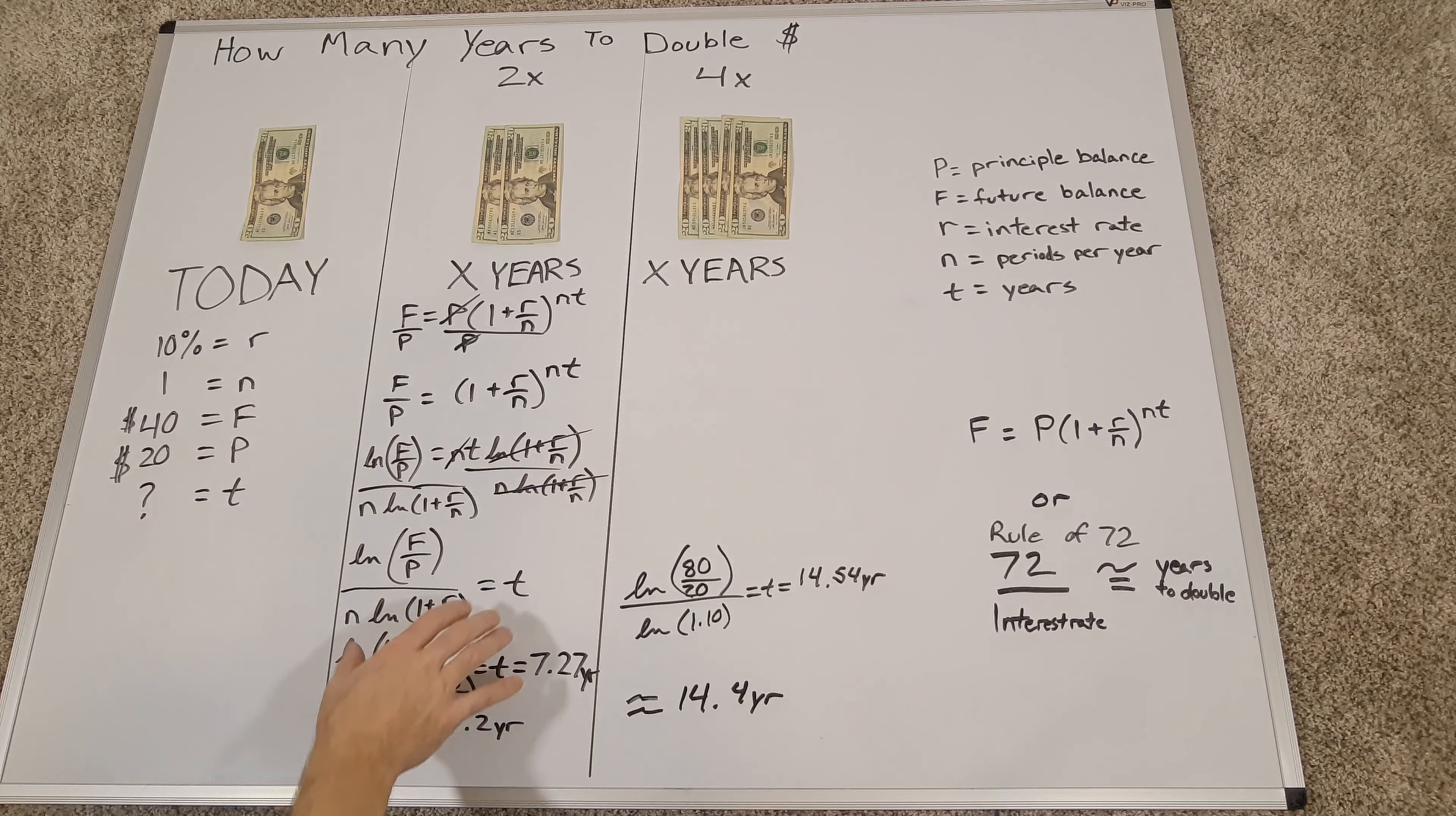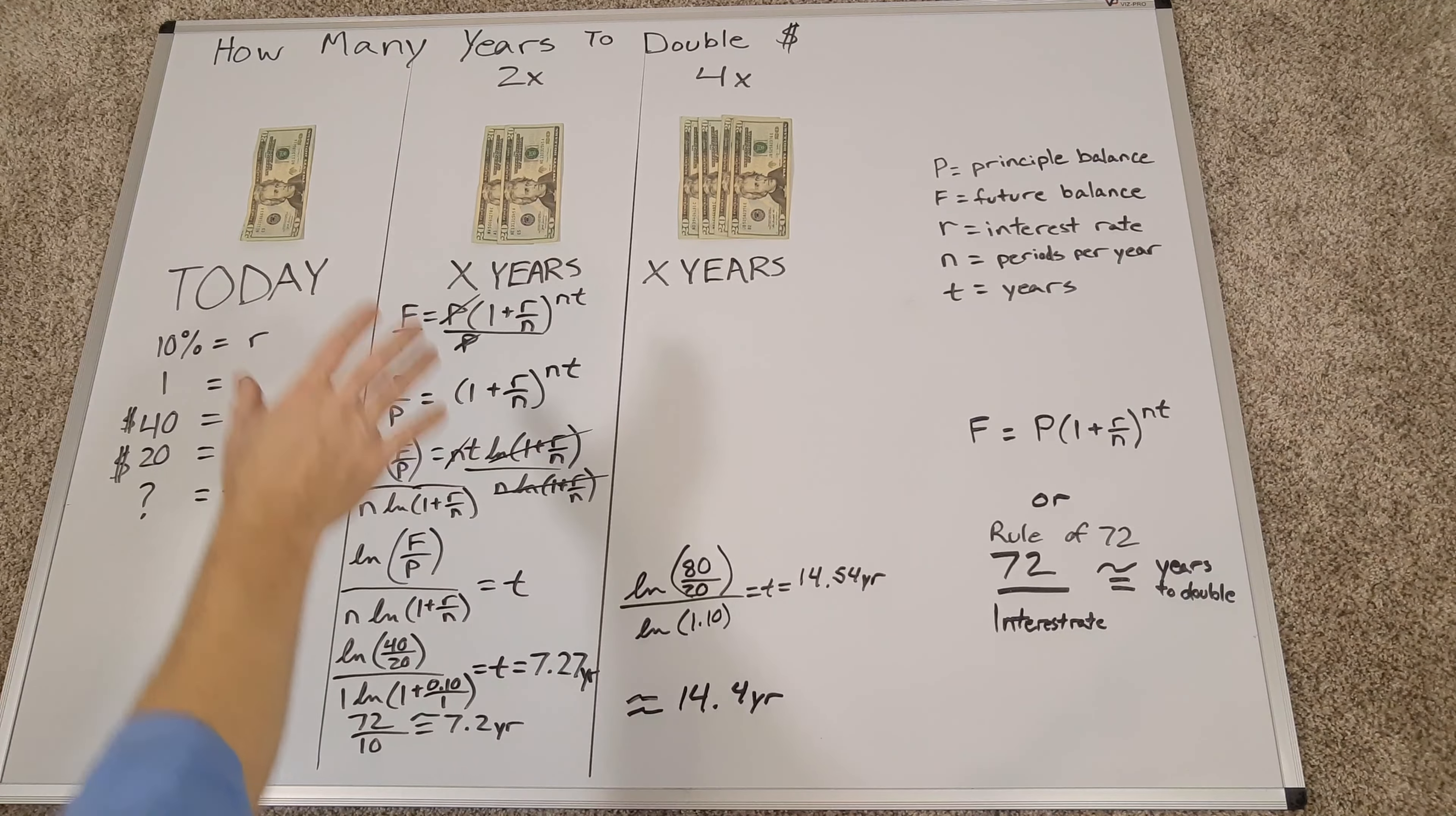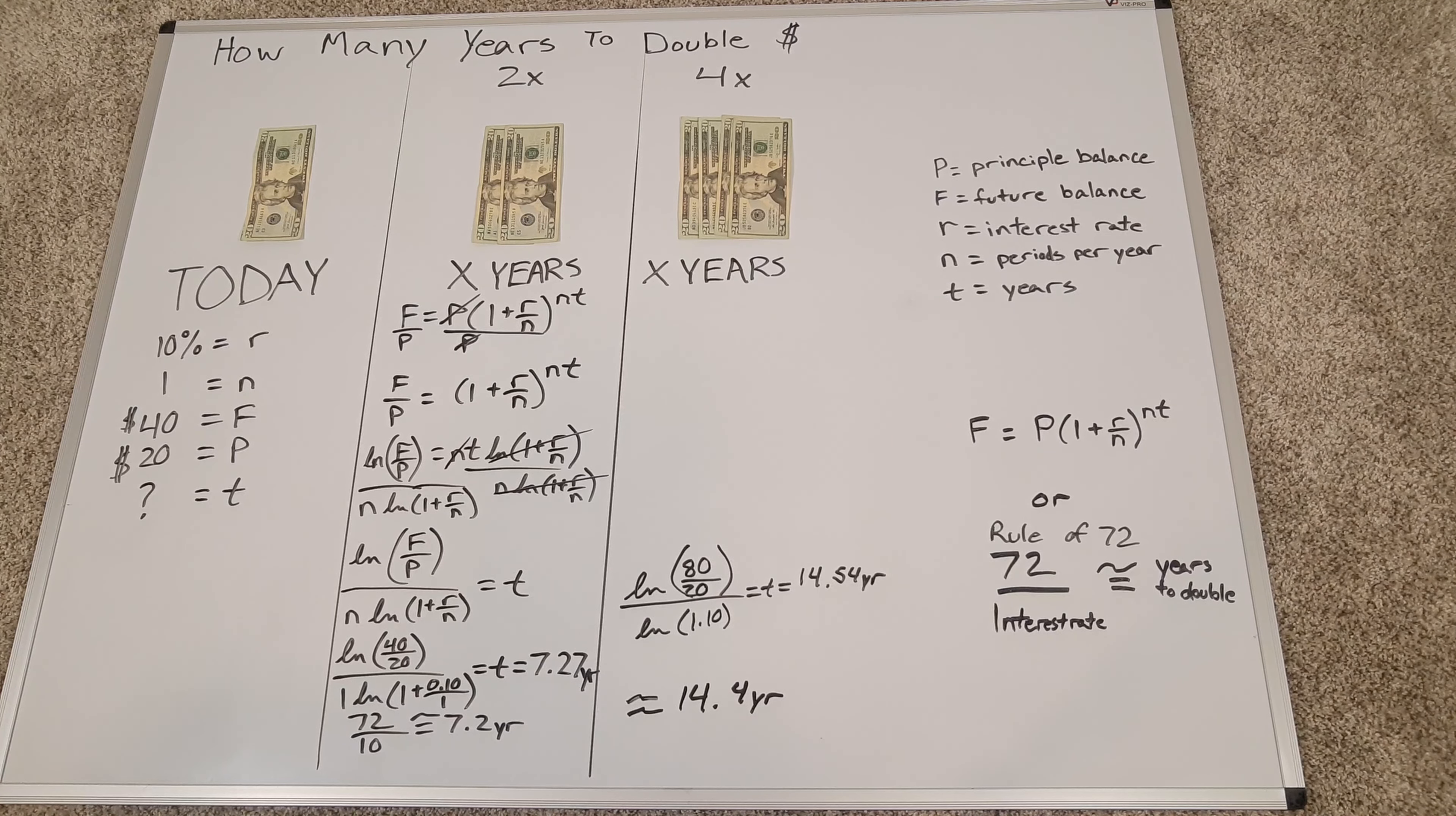Looking at all this math, trying to figure out when this doubles, it doubles in 7.27 years, but if using the rule of 72, take 72 divided by 10% interest rate, and you end up with 7.2 years, and that's close enough. So it'll take approximately 7.2 years for the money to double each time. If you want to double twice, it's 14.4 years, or if you do the actual math, it's 14.54 years.